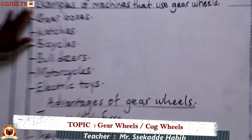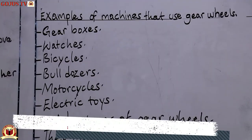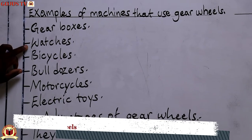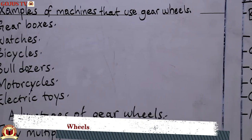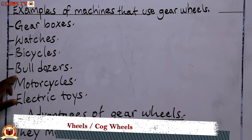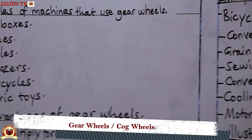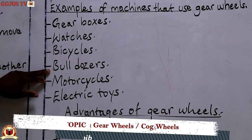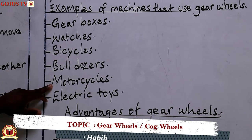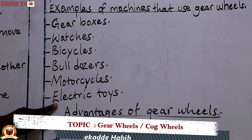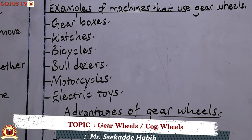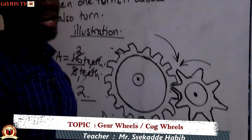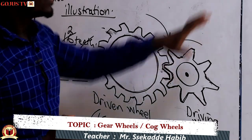Now let's look at examples of machines that use gear wheels. We have gearboxes, watches, bicycles, bulldozers — those big vehicles used to tow stranded ones — motorcycles, and electric toys. You realize that all these have gear wheel structures within them.